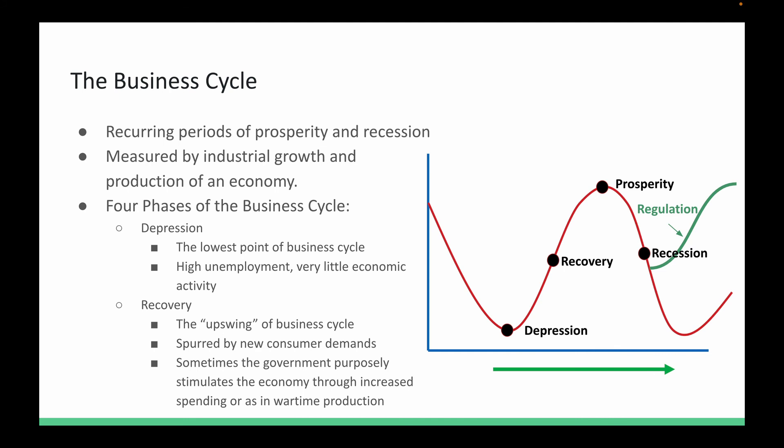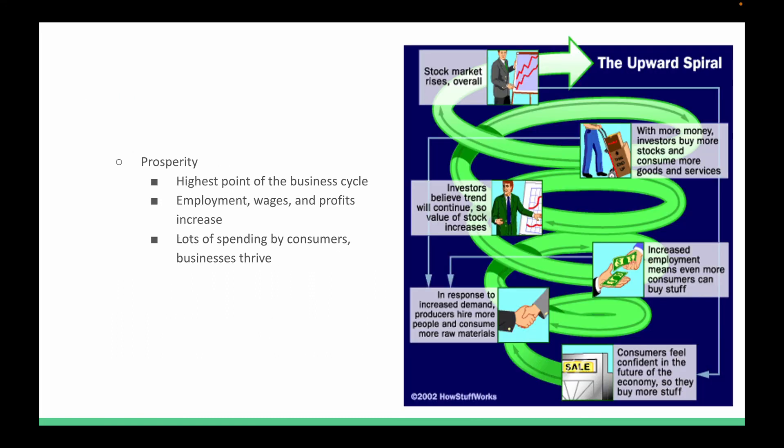The four phases: first is a depression — the lowest point of the business cycle, with high unemployment and very little economic activity. After a depression, we move into recovery — the upswing in the business cycle. Customers are willing and wanting to spend, so we have new demand, and sometimes the government stimulates the economy through increased spending — often this is done with war. At the very top we have prosperity, the highest point: great employment, high wages, increasing profits, and tons of consumer spending as businesses thrive.